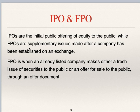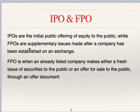To begin with, we'll see IPO first. IPO is Initial Public Offer — when for the first time a company offers its shares to the public, it is known as IPO. Subsequently, when an already listed company — one which has already gone through the IPO process — again asks the public to purchase its shares, it is known as FPO, Follow-on Public Offer.